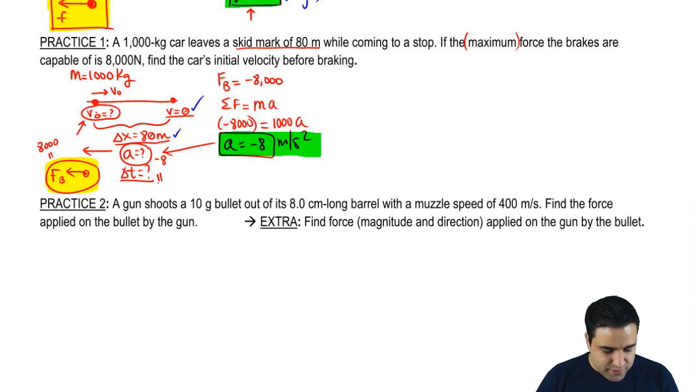This delta t is my ignored variable, sad face, and that tells me that I should be using the second equation. v final squared equals v initial squared, plus 2a delta x.